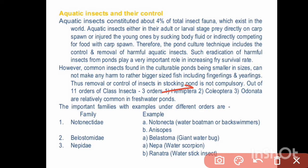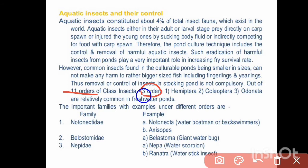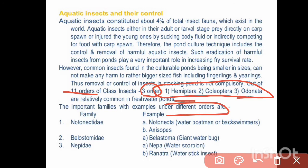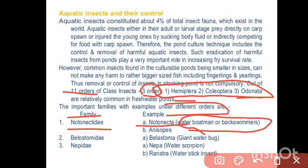Out of 11 classes of Insecta, you can be asked the common name and the family. Family Belastomatidae — Belastoma — Giant Water Bug. Family Nepidae — Nepa — Water Scorpion, and Ranatra — Water Stick Insect.